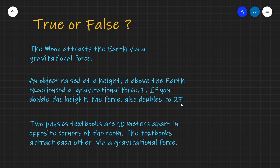Let's have a look at the answers. The first statement says the moon attracts the earth via a gravitational force — this statement is true. The second statement says that an object raised at a height h above the earth experiences a gravitational force F; if you double the height, the force also doubles to 2F.